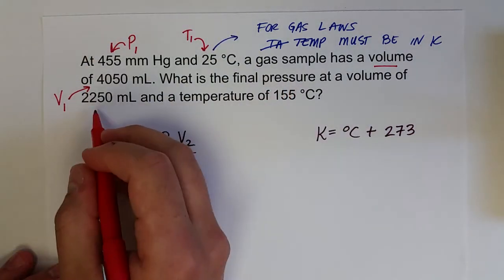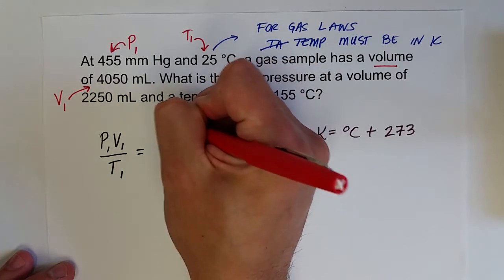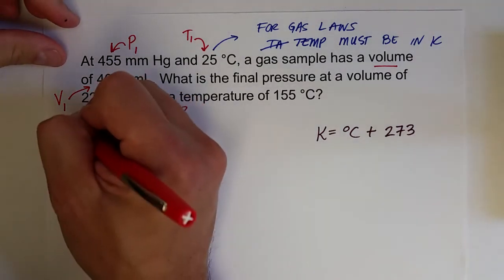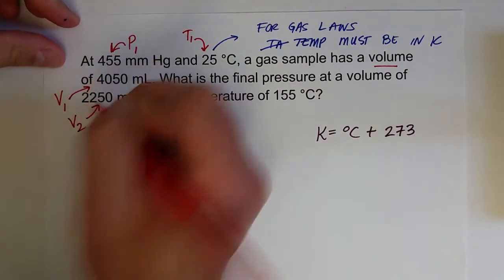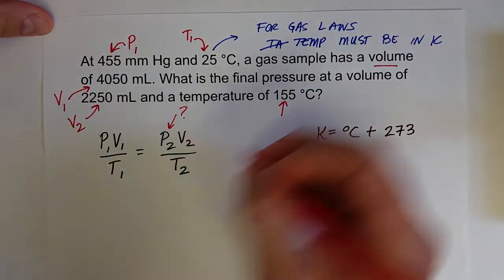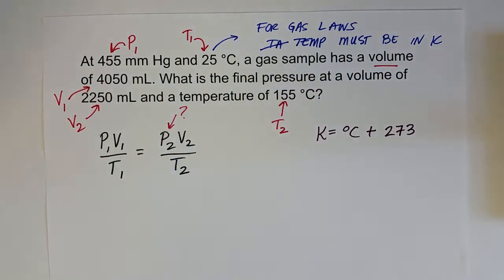The final pressure is what we're looking for. What is the final pressure? So we're going to be solving for V, or excuse me, P2. V2 is 2250, and then the temperature, the final temperature is T2, 155 degrees Celsius.